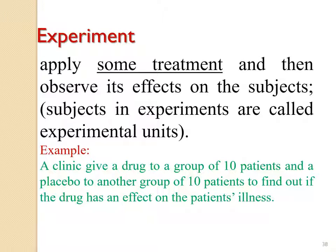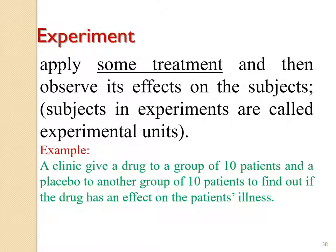An experimental study applies some treatment and then observes its effect on the subjects. Subjects in an experiment are called experimental units. For example, a clinic gives a drug to a group of 10 patients and a placebo to another group of 10 patients to find out if the drug has an effect on the patient's illness. One group is the experimental group and the other is the placebo group. This study is called an experimental study, and it is very popular in the medical field.